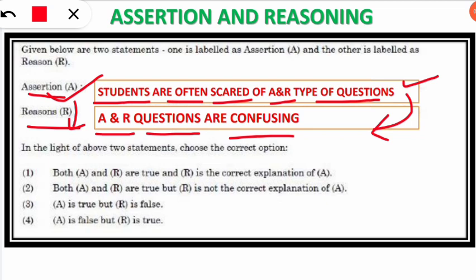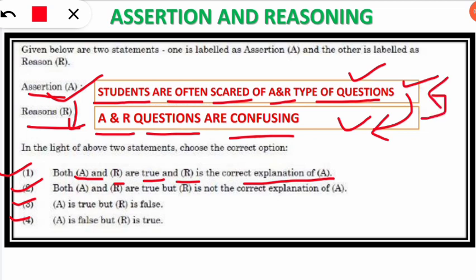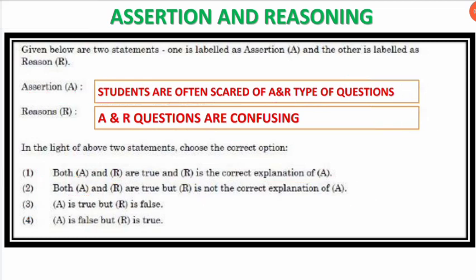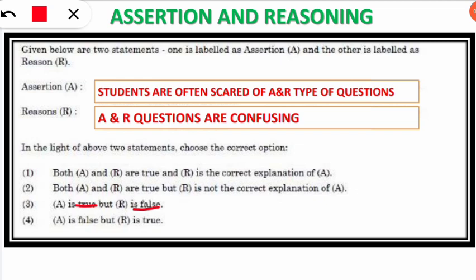There are four options. The first option is that both assertion and reasoning are true, and R is the correct explanation of A. The second option is that both are correct, but R is not the correct explanation of A — there is no link between the two, but both statements are right. Option three means that A is true but R is false — the assertion is correct but the reason is wrong. The fourth option is that assertion is false but the reason is true.